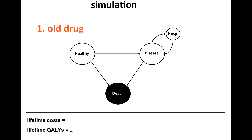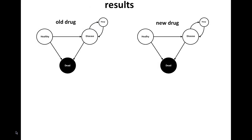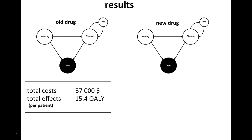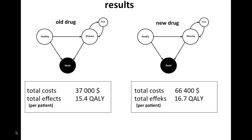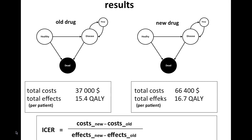In a cost-effectiveness analysis, a simulation with a cohort treated with the old drug is first performed, and lifetime costs and QALYs are collected. Then the same is done with the cohort treated with the new drug. As an example, the model gives the following results: treatment with the old drug resulted in costs of $37,000 and 15.4 QALYs per patient; treatment with the new drug resulted in costs of $66,400 and 16.7 QALYs per patient. We calculate the ICER — the difference in costs divided by the difference in QALYs — which gives an ICER of $22,615 per QALY.